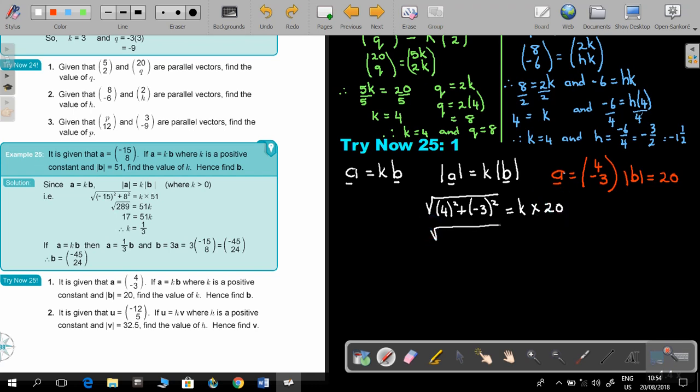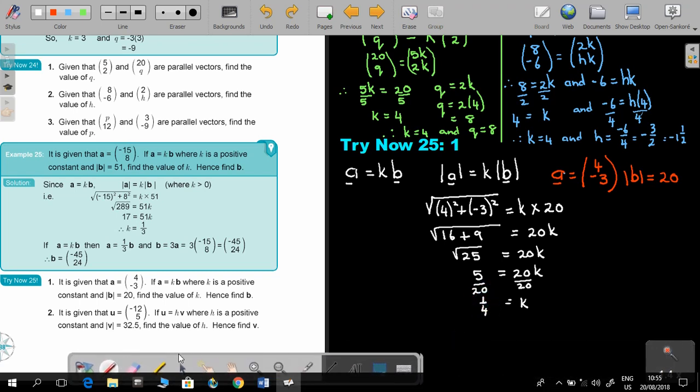So, if I work out this, I'm going to get 16 plus 9, and that's going to be 20K. Don't underline it. It's not a vector. It's a scalar. So, that's going to be 25 is equal to 20K. Now, this is nice, because the square root of 25 will just be 5. And then I divide by 20, and I divide by 20, and I get that the value of K is going to be 1 quarter.